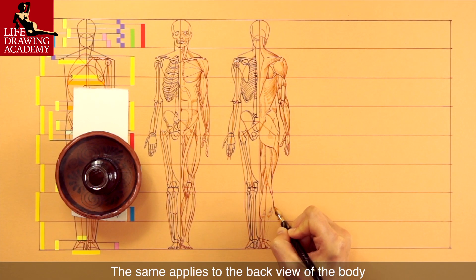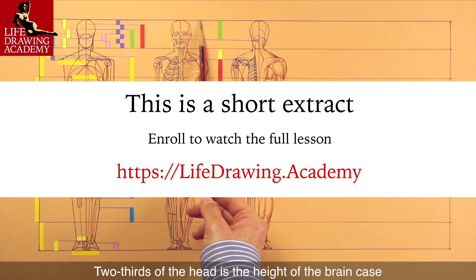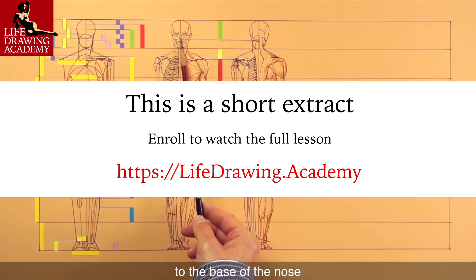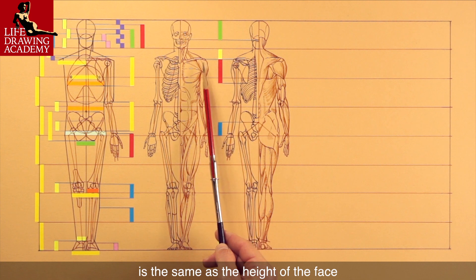The same applies to the back view of the body. Two thirds of the head is the height of the brain case. It is the distance from the top of the head to the base of the nose. The height of the shoulder blade is the same as the height of the face.